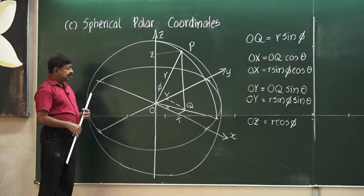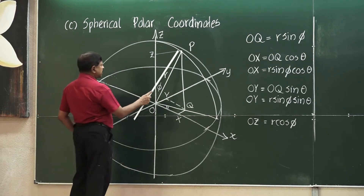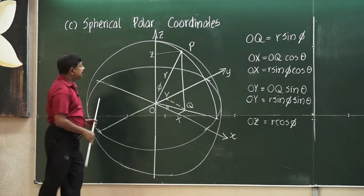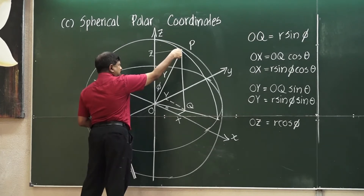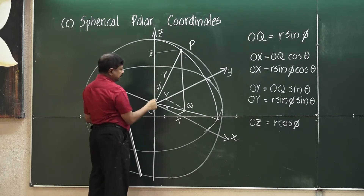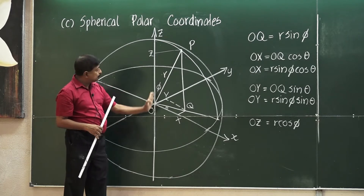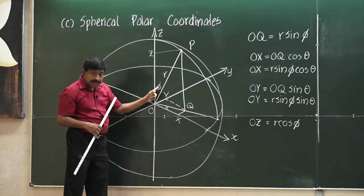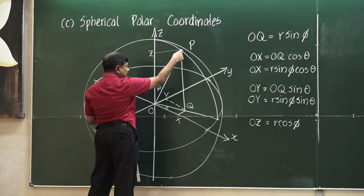We will consider a sphere centered at the origin. Take a point on the sphere — let that point be P. The distance from O to P can be taken as R, and OP is a line segment. The line segment makes an angle with the positive direction of Z; let this angle be phi. Now we project OP onto the XY plane.